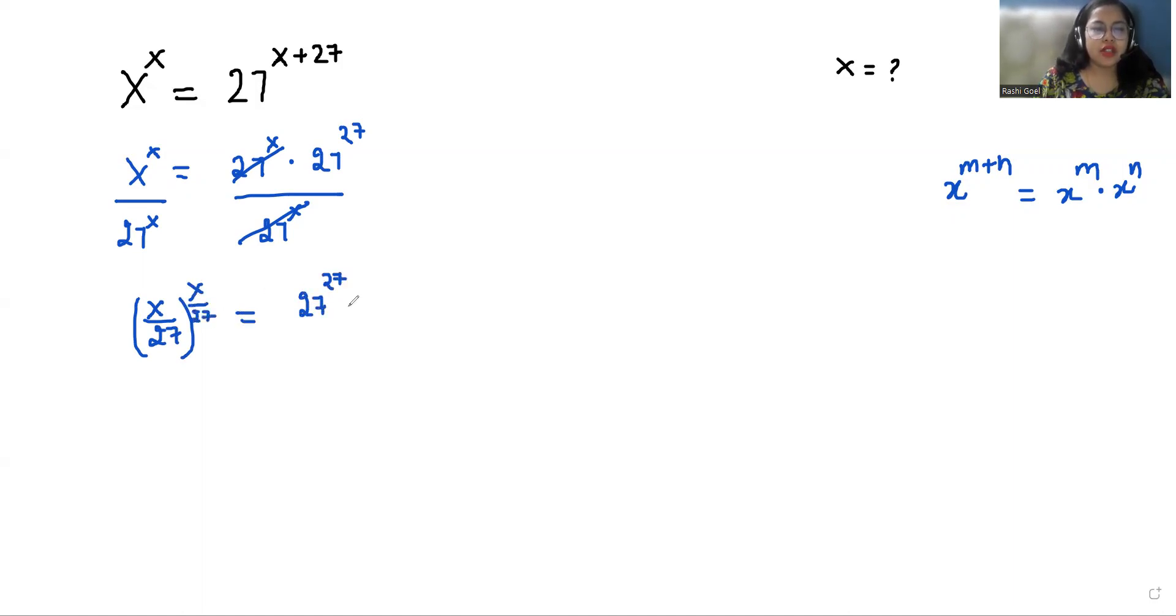Now I'm going to divide with power 27 both sides, so here we can cancel out, so x by 27 whole power x by 27 equals 27. Whole power x by 27 equals 27, we can write it as 3 to the power 3.